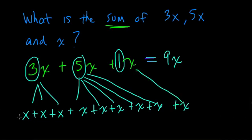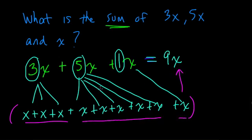Well, when you're adding these up, if you take the sum of all of these x's, all you're going to do is count the number of x's. So 3x's plus 5x's is 8x's plus 1x is 9x.